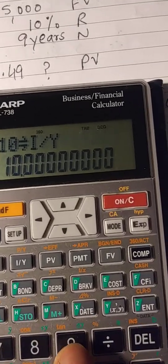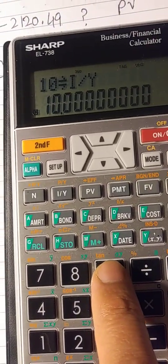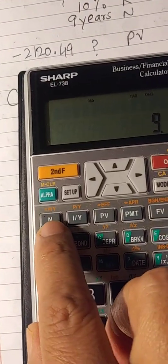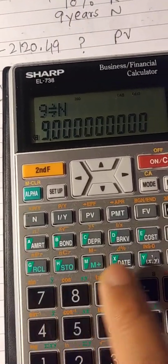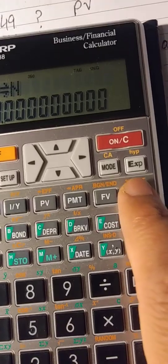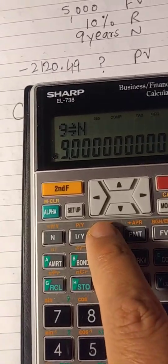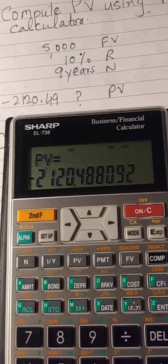So press 9. For time we have N here. Then compute, right, then present value.